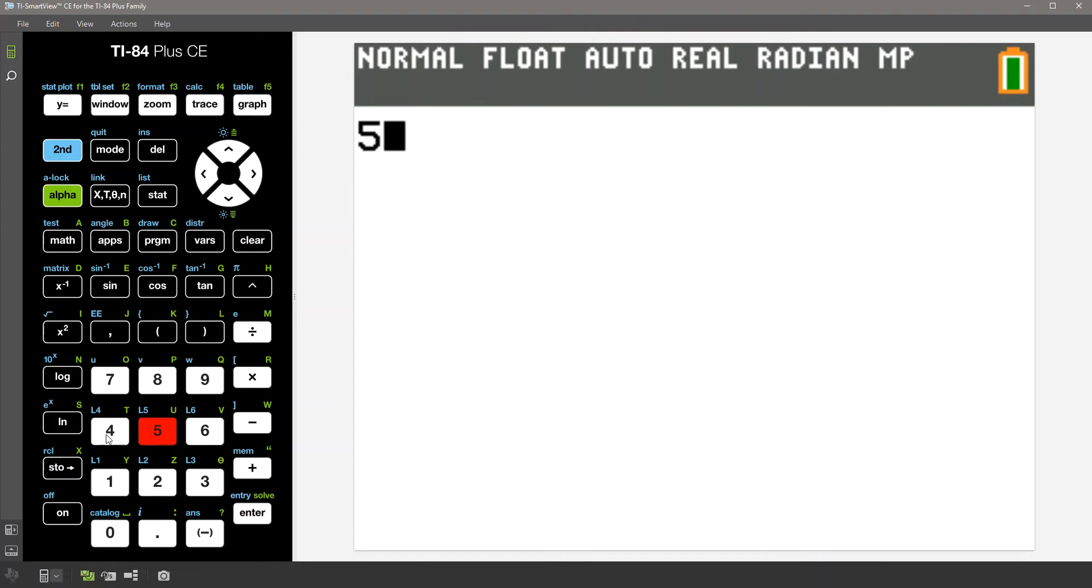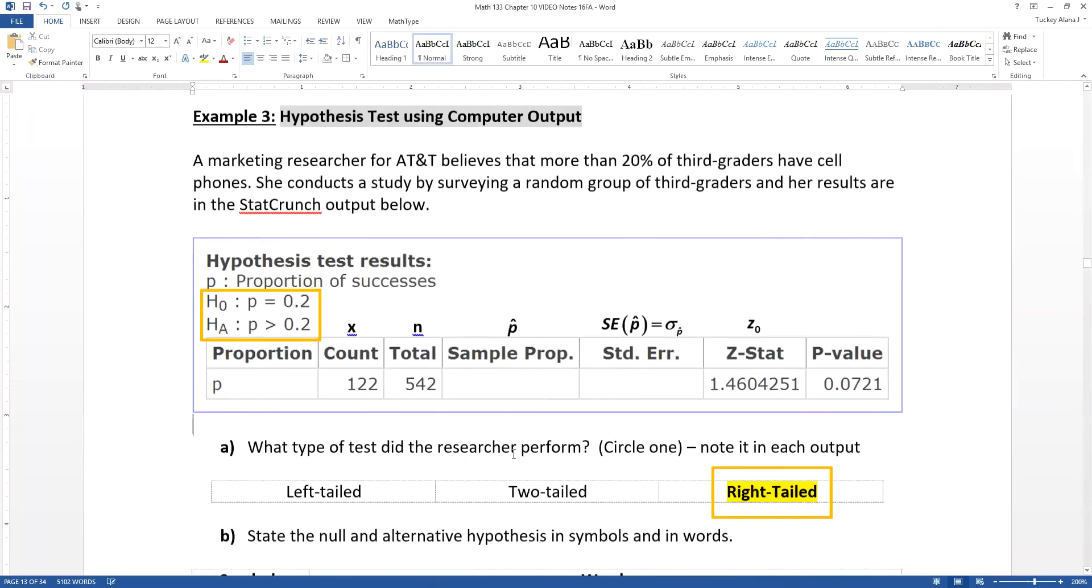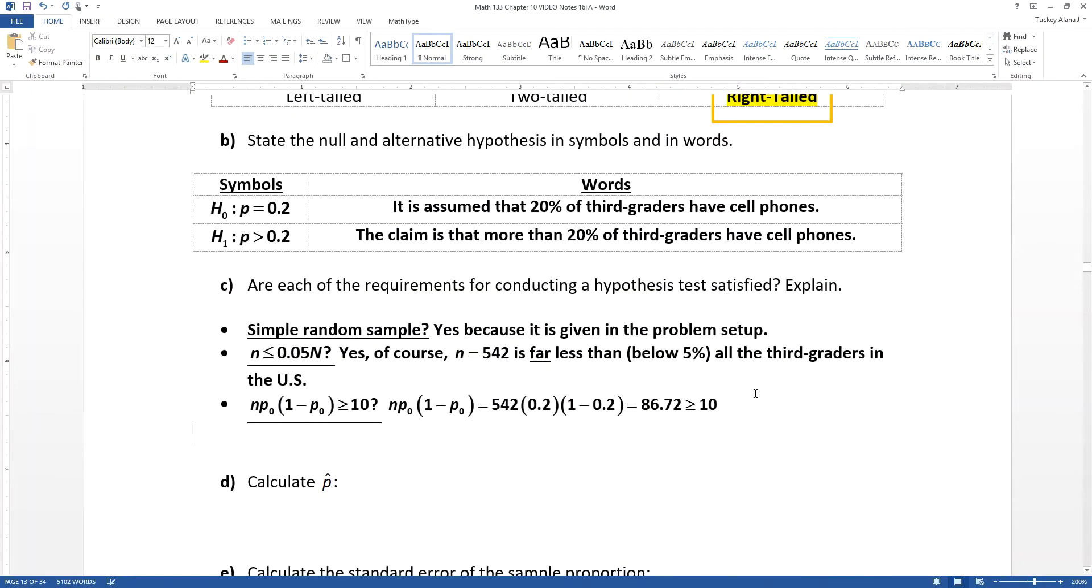So we take 542 and we multiply it by 0.2 and then times it by (1 - 0.2) and we get 86.72, which is well above the threshold of 10. So we are happy, so this is a yes.